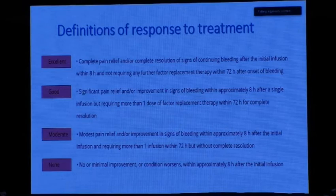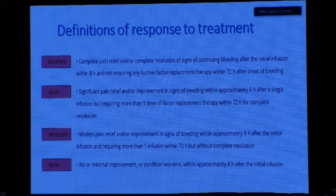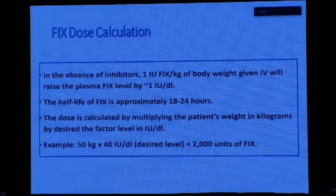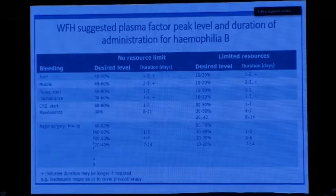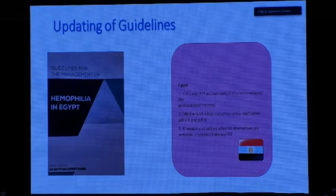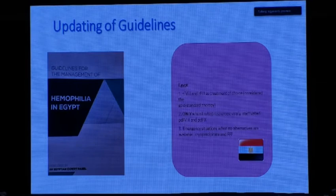After giving any treatment, we must assess patient-reported outcomes and define what constitutes excellent, good, moderate, or non-response. You also need to calculate dosing correctly: every one international unit of Factor IX raises the plasma level by 1 IU/dL — this is different from Factor VIII, so please calculate Factor IX doses correctly. The WFH guidelines specify desired levels and duration for every bleeding site. We have Egyptian national guidelines developed by Professor Dr. Galila, Dr. Amal Bishlawi, and colleagues, which we update annually.